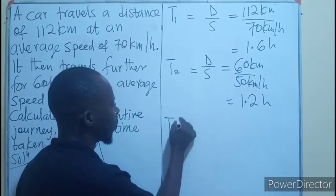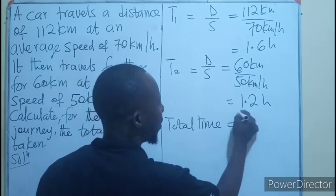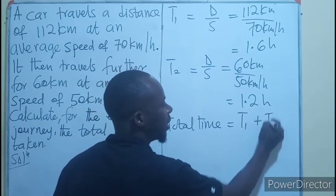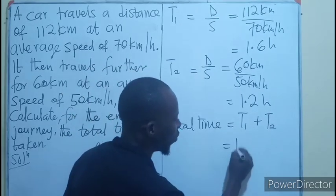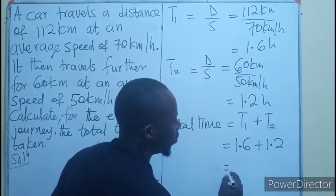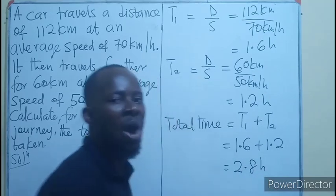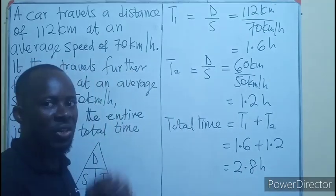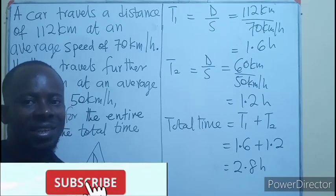So the total time is going to be the time of the first part of the journey plus the time from the second part of the journey. And that will be 1.6 plus 1.2, which equals 2.8 hours. Which means for the entire journey, we are going to be using 2.8 hours.